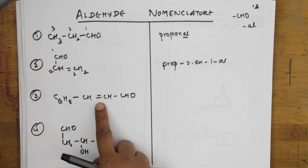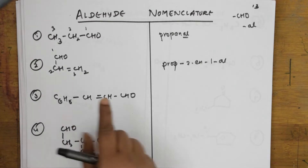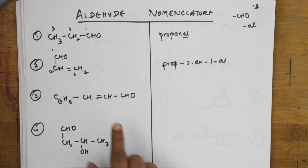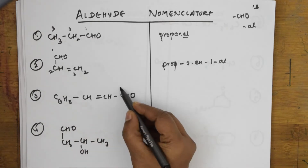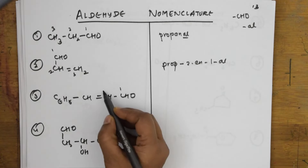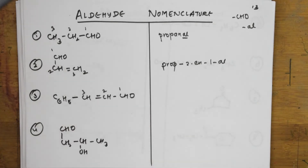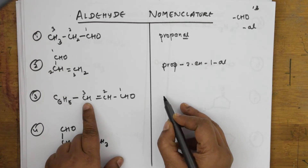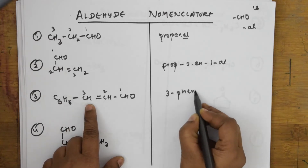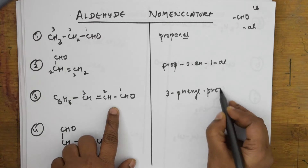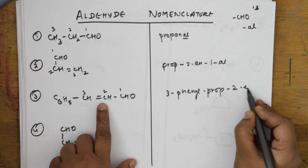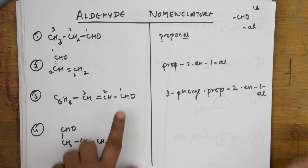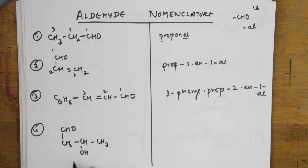Here you have an aldehyde group, you have an alkene, and you have a phenyl group. I told you — please watch the video where I gave the order of preference for naming. First, the aldehyde group gets position one, this is two, this is three. Phenyl — like alkyl, alkoxy, halogens — is taken as a substituent. So we name it 3-phenylprop-2-en-1-al.